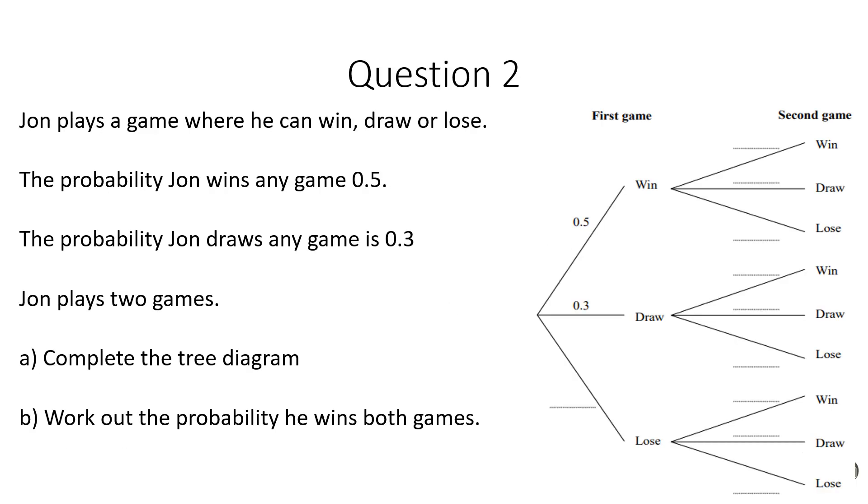Okay. Slightly more complicated example this time then. So if John plays a card game where he can win, draw or lose. The probability that he wins is 0.5. The probability of him drawing is 0.3. He's going to play two games of this particular card game.